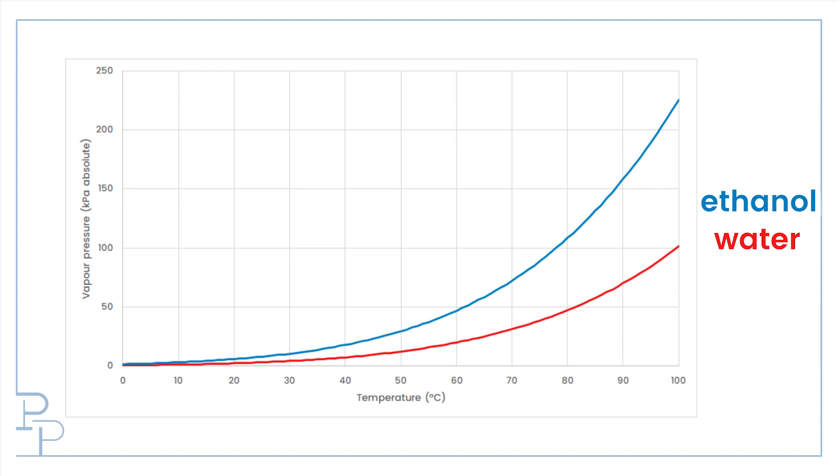Remember, vapor pressure is always reported as absolute pressure, not gauge pressure. This is always the case when dealing with thermodynamics. A vapor pressure curve tells you the boiling point of a specific substance at a given pressure. Have a look. We say that regular atmospheric pressure at sea level is 101.3 kilopascals, a little over one bar. If we go across to the ethanol curve, we see we intersect at 78 degrees. If we go a little bit further to the water curve, we get to 100 degrees Celsius.